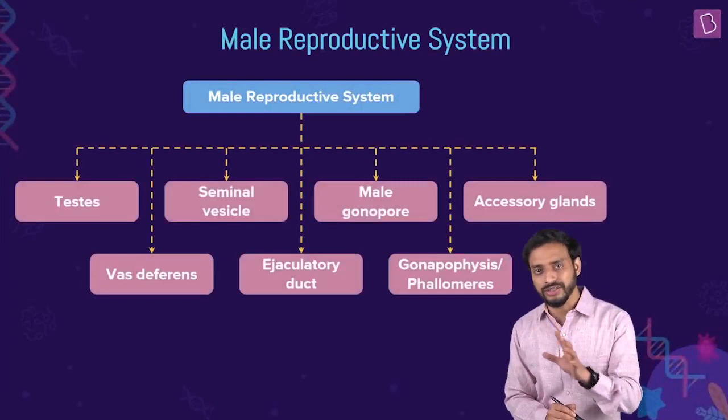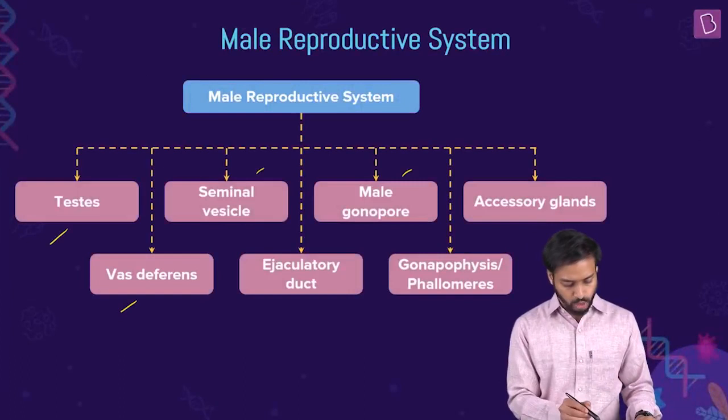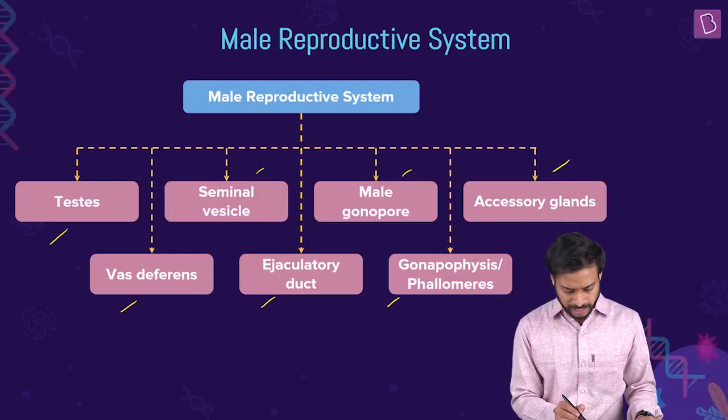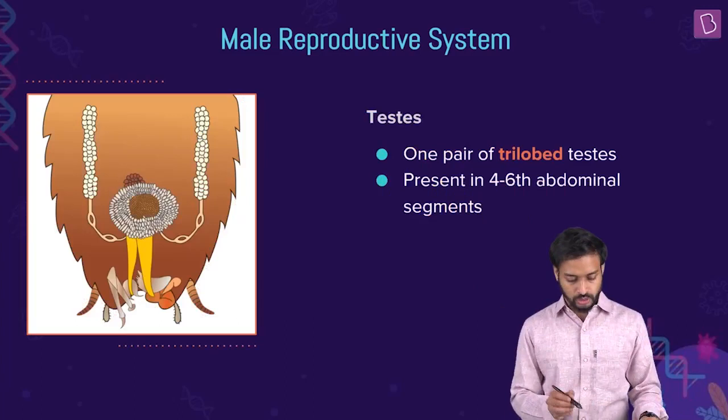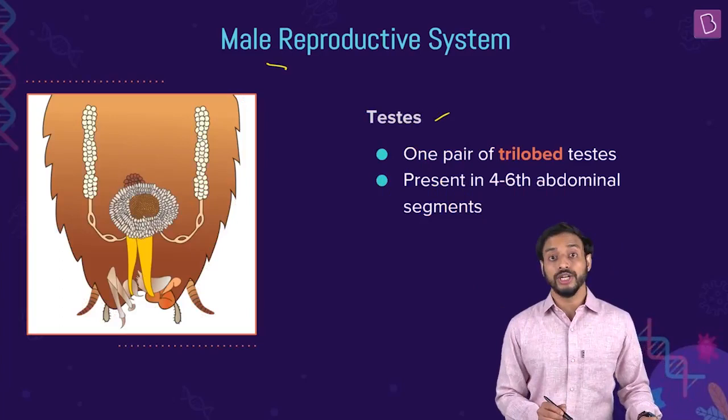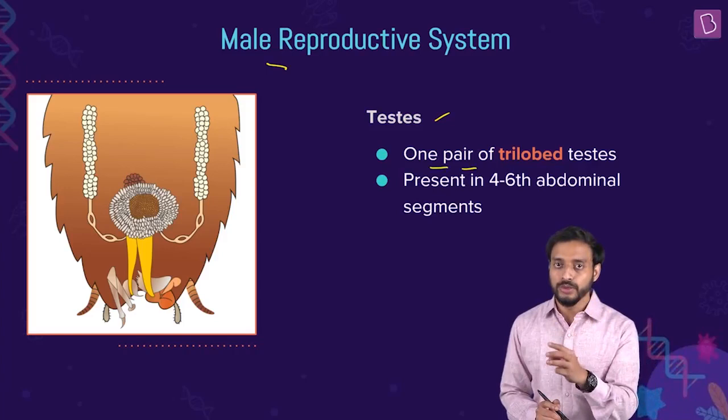The male reproductive system of the cockroach includes structures such as the testis, seminal vesicles, vas deferens, male gonopore, ejaculatory duct, accessory glands, and the gonapophysis (also termed phallomeres). Now let's discuss the important structures essential for your examination. Starting with the testis — note it down: one pair of testis is present.